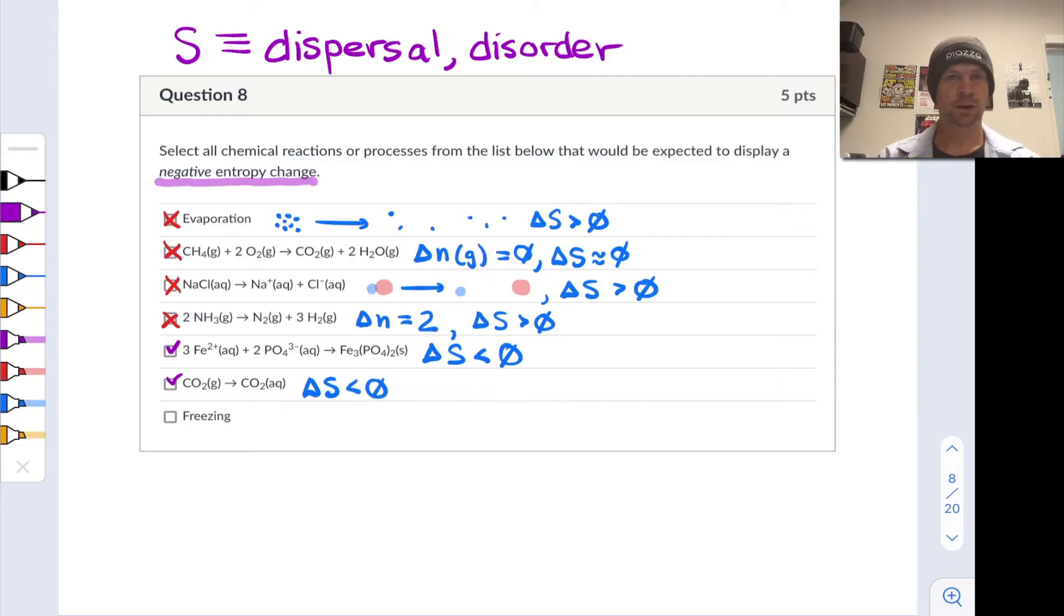Now finally, with freezing, freezing similar to condensation, the reverse of evaporation, takes a liquid where the particles are moving a little bit faster, are a little bit more randomly oriented, a little bit more dispersed. Quite often, the volume of a liquid is larger than the volume of the corresponding solid. And we're concentrating that energy down, we're concentrating those particles down into a smaller volume. Generally, they're moving more slowly and that sort of thing. And so this as well corresponds to a negative change in entropy. With the products, the solid product, a more ordered situation, more concentrated situation than the liquid reactant.